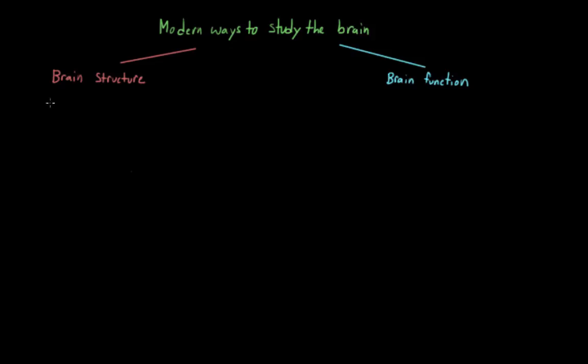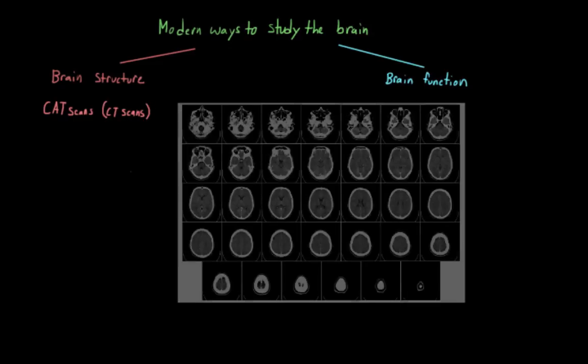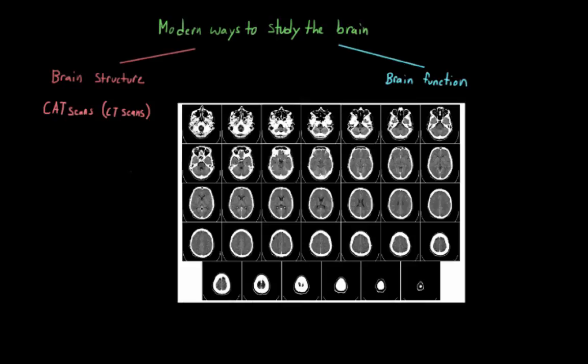On the structural side, we'll start with CAT scans or CT scans, which stands for computerized axial tomography. This method uses x-rays in order to create an image of the brain. This is super useful in that it can show us whether or not someone has a tumor, or if there's abnormal swelling or bleeding, but it can't tell us anything about what areas of the brain are active at a given time.